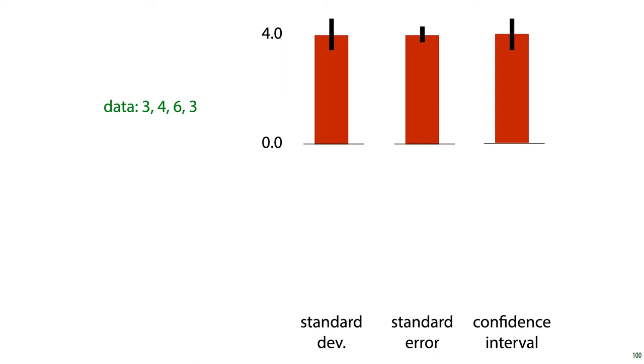These are the three most common options. Before we explain exactly what they mean, let's look at how they behave, specifically when we increase the amount of data. So here on the left, we see some measurements, 3, 4, 6, and 3, for which we are reporting the average, 4, together with an error bar. And that error bar is either the standard deviation, the standard error, or a confidence interval.